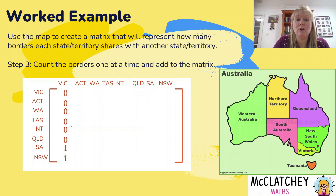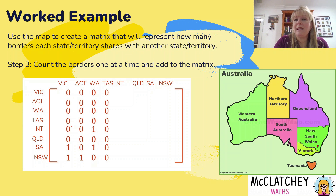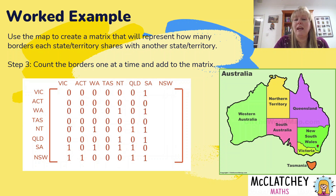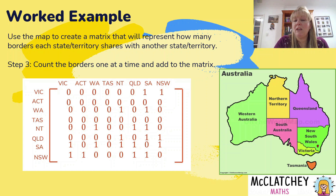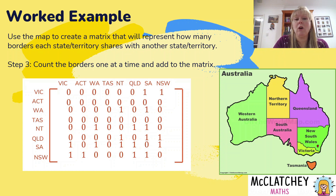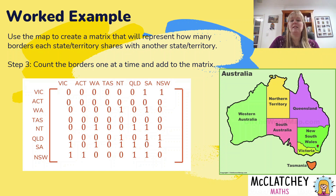We repeat that process right across the matrix for the Australian Capital Territory, Western Australia, Tasmania, Northern Territory, Queensland, South Australia, and New South Wales. You may want to pause the video here and confirm all borders are in the right places. By adding up the columns you can work out which state has the most borders. Victoria has two, ACT has one, Western Australia has two, Tasmania has no borders with any other state, Northern Territory has three, Queensland has three, South Australia has five different borders — making it our most bordered state — and New South Wales has three.